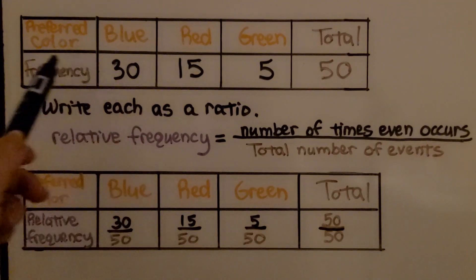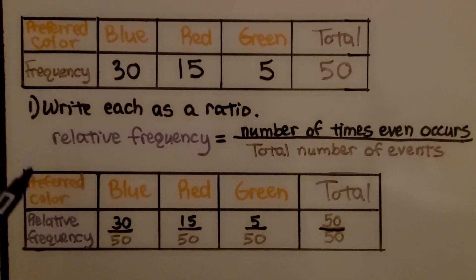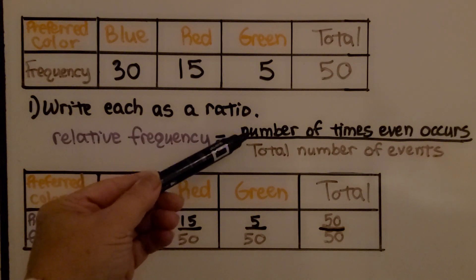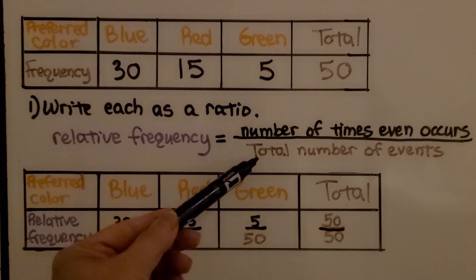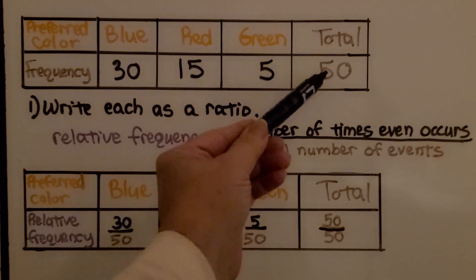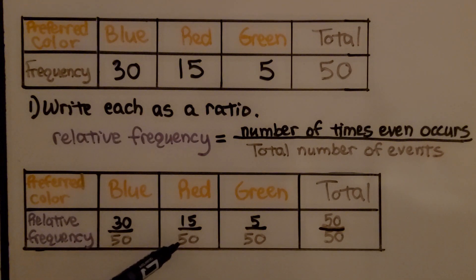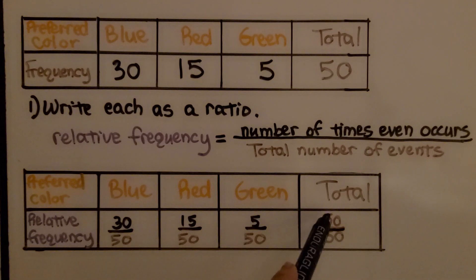Now that we have our data organized in the frequency table, we write each as a ratio for the relative frequency table. It's going to be the number of times the event occurs — the 30, 15, or 5 — over the total number of events, the 50. We write 30 over 50 for blue, 15 over 50 for red, 5 over 50 for green. And if we add up 30 plus 15 plus 5, it equals 50, over the 50 total.